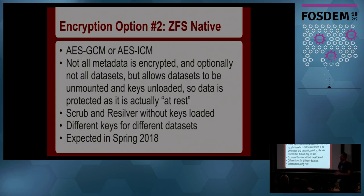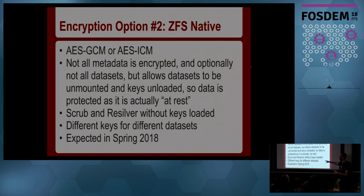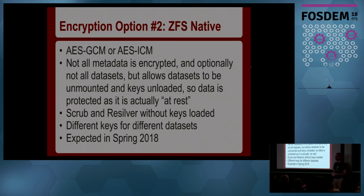The metadata checksum is split in half: the first half is the checksum of the cleartext and the second half is the checksum of the ciphertext. This allows scrub, resilver, and replacing failed disks to be done without the encryption keys being loaded — so the storage administrator doesn't need access to the encryption keys to keep the system up and replace failed drives. You can resilver encrypted data without having the encryption keys loaded. You can also have different keys for different datasets with regular inheritance if you want. This is available in ZFS on Linux and should be available in FreeBSD and Illumos once it passes more code review.